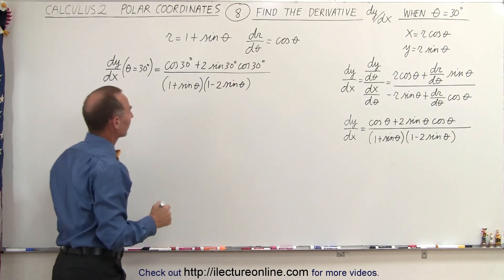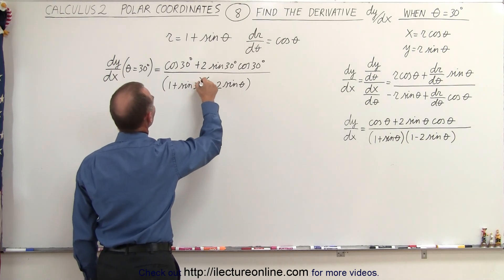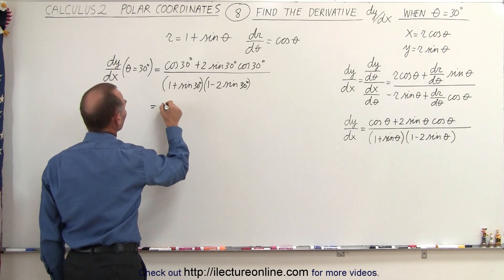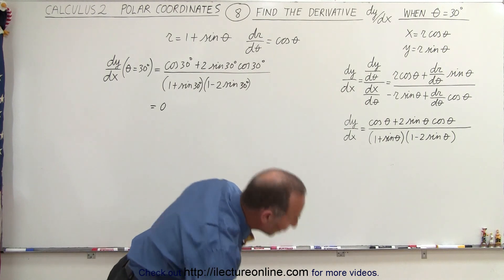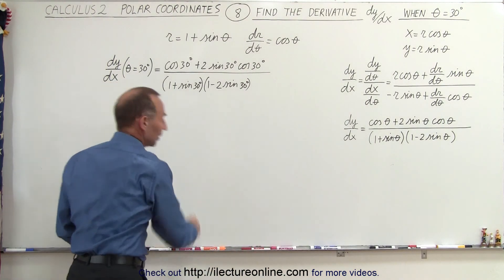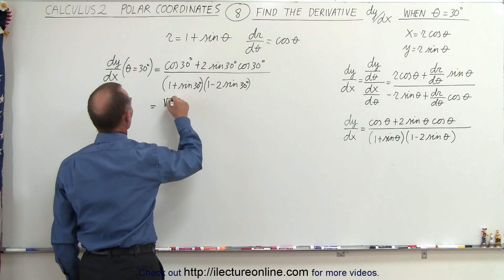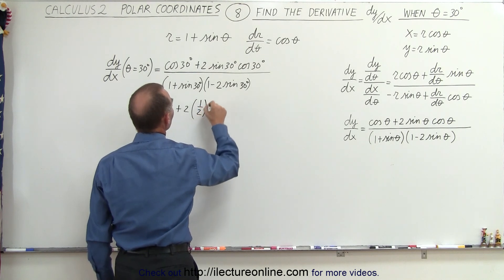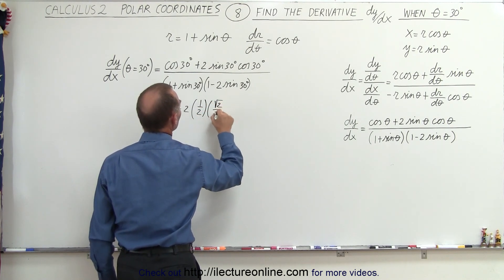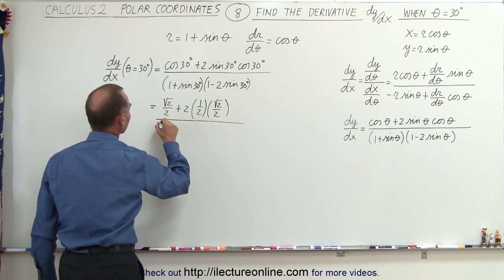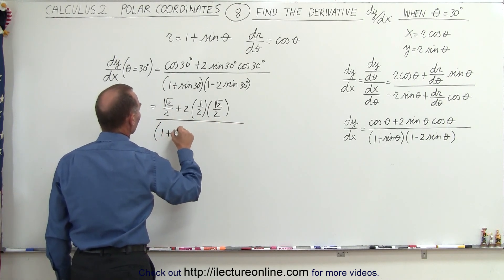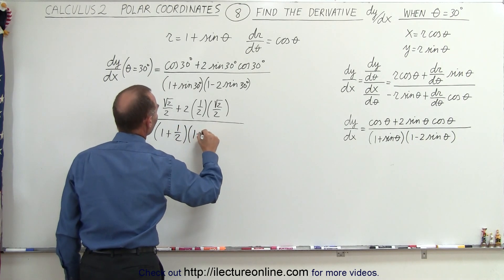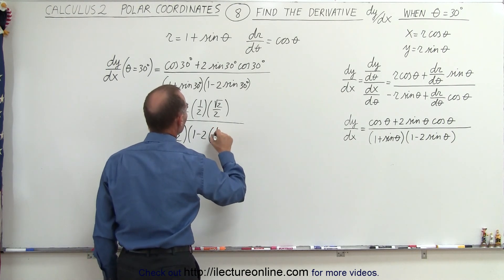That's better. Instead of theta, let's write in the angle of 30 degrees and evaluate those. The cosine of 30 is the square root of 2 over 2, plus twice the sine of 30, which is 1 half, times the cosine of 30, which is the square root of 2 over 2, all divided by the quantity 1 plus 1 half, multiplied by 1 minus 2 times the sine of 30, which is 1 half.